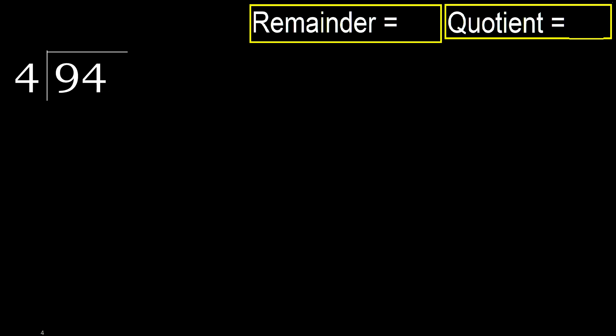94 divided by 4. 9 is not less than 4, therefore: 4 multiplied by which number is nearest to 9 but not greater? 4 multiplied by 3 is 12, which is greater. 4 multiplied by 2 is 8, which is not greater.